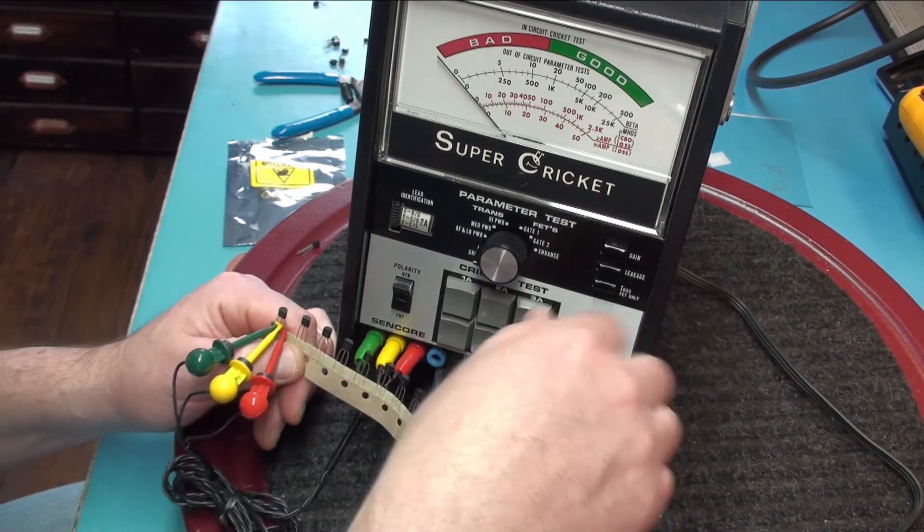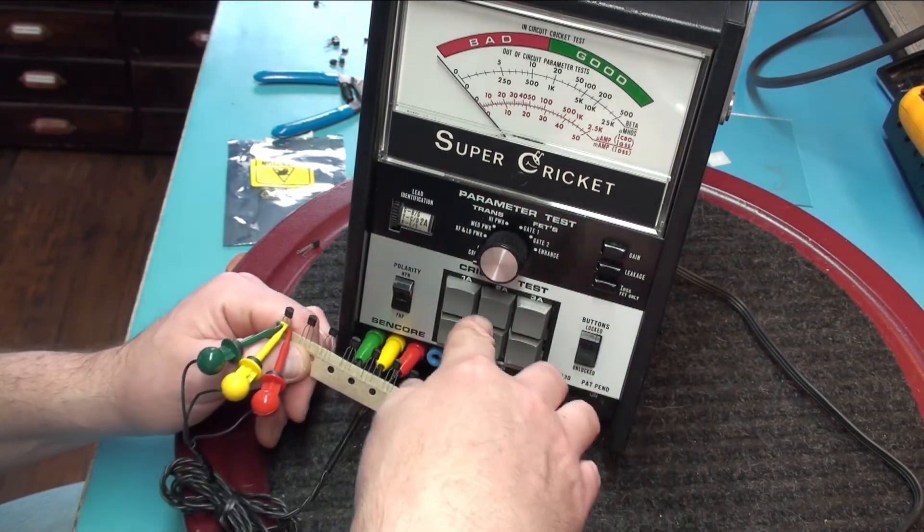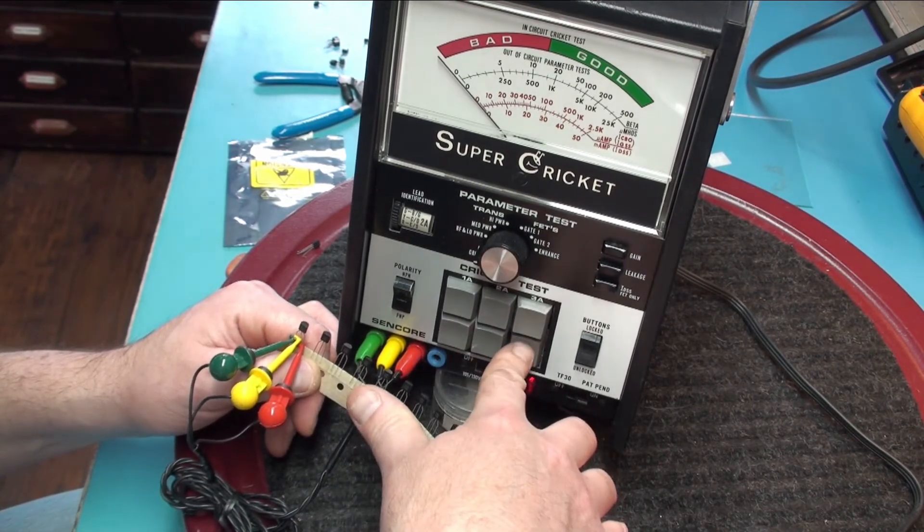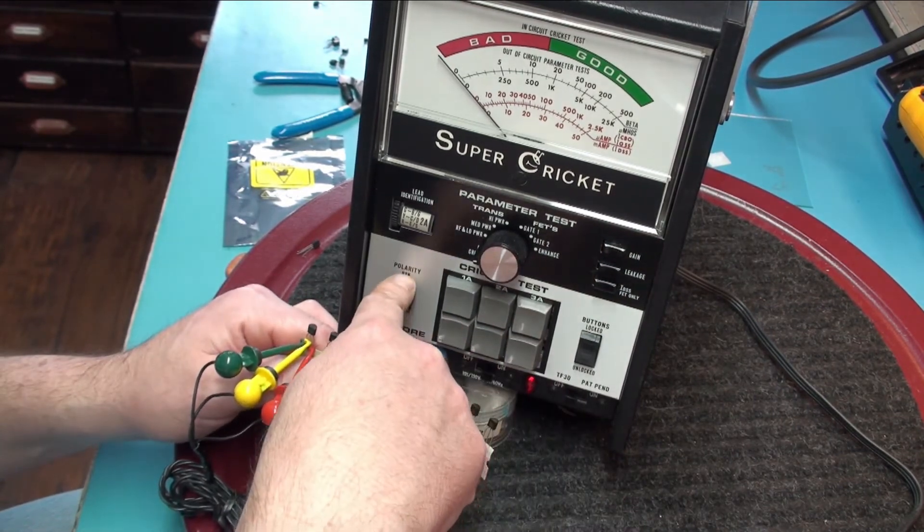So first thing we are going to do is figure out what this is as far as its lead identification. So I am going to put it in Cricket mode. Right now I am on PNP and I am going to go through.